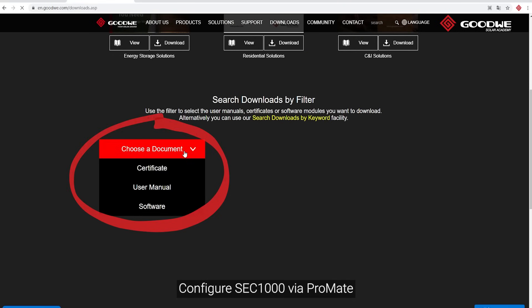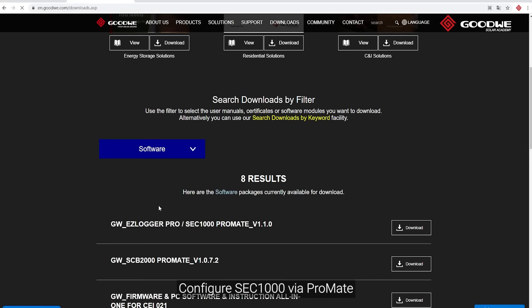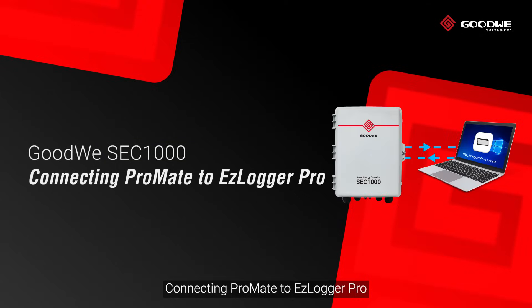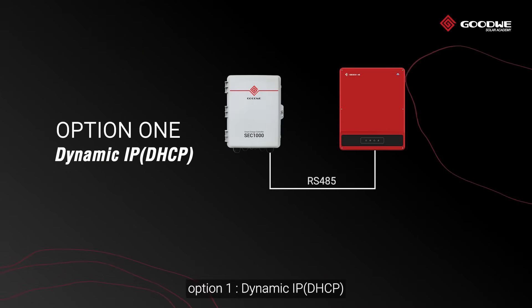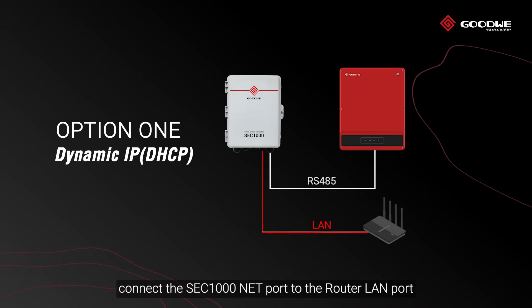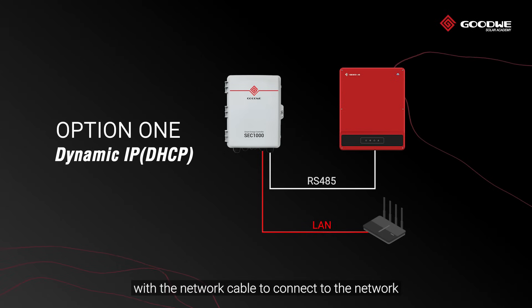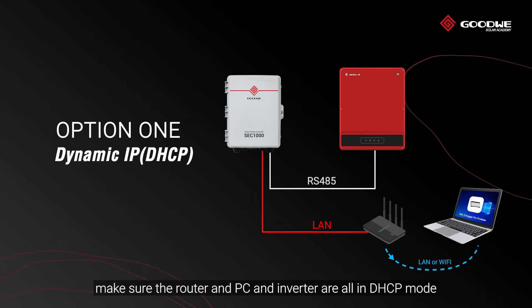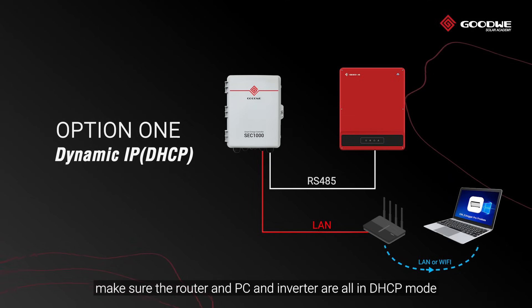Configure SEC 1000 via Promate. Connecting Promate to Easy Logger Pro. Option 1: Dynamic IP. Connect the SEC 1000 network port to the router LAN port with a network cable to connect to the network. Connect the router to the PC. Make sure the router, PC, and inverter are all in DHCP mode.